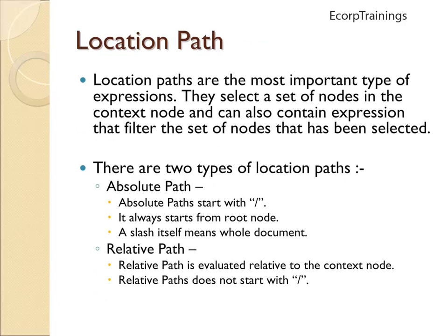Coming to location path: location paths are the most important type of expressions. They select a set of nodes relative to the context node, and can also contain expressions that filter the set of nodes that has been selected. There are two types of location paths: absolute path and relative path.